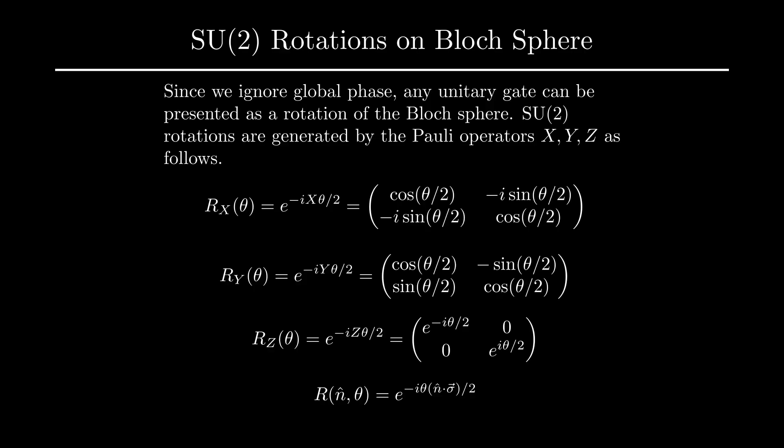SU(2) rotation matrices themselves are generated by the x, y, and z Pauli operators. In particular, we can take a complex exponential of any of these multiplied by i theta over 2 to get rotation operators Rx, Ry, and Rz, which each rotate about the corresponding axis.